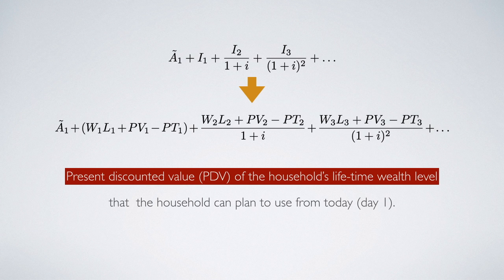Later we are going to use this to discuss whether different government finance methods would change the household's present discounted value of its lifetime wealth. If a different financing method would change this value, then it would create a wealth effect on the household. We also know that if government increases tax in a given period, then that period's I — which is income net of tax — would decrease.